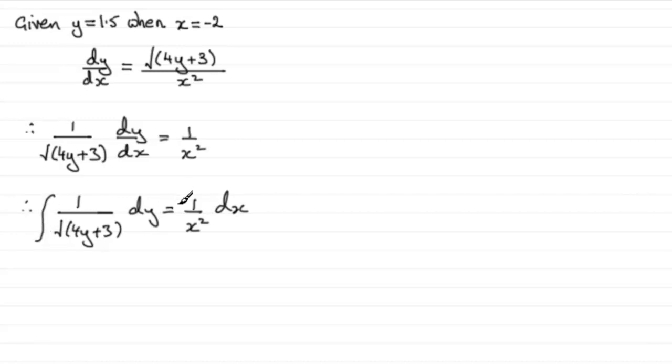So I'm going to have the integral of this side is exactly the same as the integral of that side. Now how do I integrate both of these? Well for this one we would change this to the integral of 4y plus 3 to the minus a half.